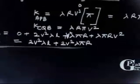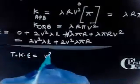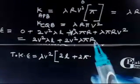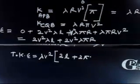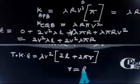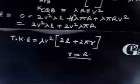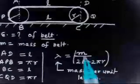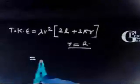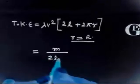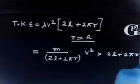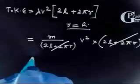Taking v² and λ common: Total KE = v²λ(2l + 2πr). Now substituting λ = m/(2l + 2πr), the factor (2l + 2πr) cancels, giving Total KE = mv².